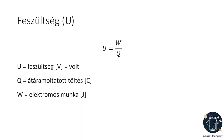Megbeszéltük, hogy az anyag elektromos töltéssel rendelkezhet. Az elektromos töltéssel rendelkező testek között kölcsönhatás lehet, amelyet az elektromos mező vagy erőtér közvetít. Az elektronok mozgatásakor az elektromos mező munkát végez, és ezt a munkavégzést a feszültség nevű mennyiséggel jellemezhetjük, amit U-val jelölünk, a mértékegységét nagy V-vel jelöljük és voltnak mondjuk. A feszültség megadja, hogy mekkora munkát végez a mező egységnyi töltésen, amíg egyik pontból a másikba juttatja azt.